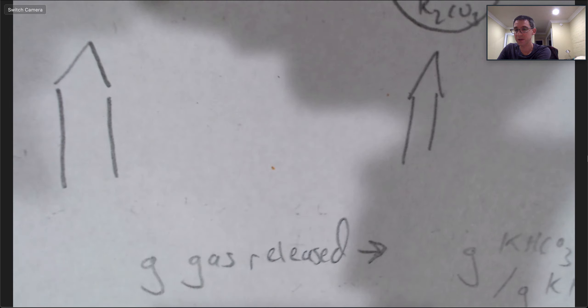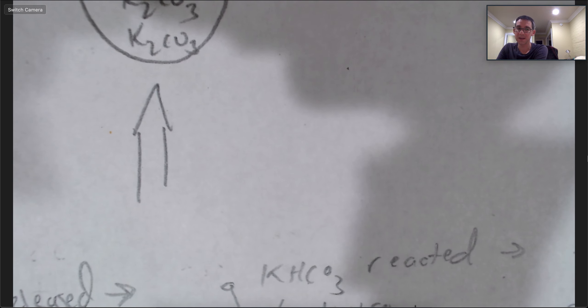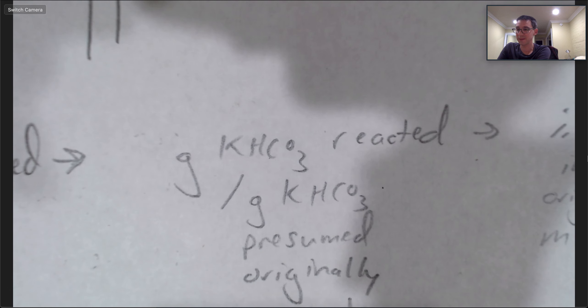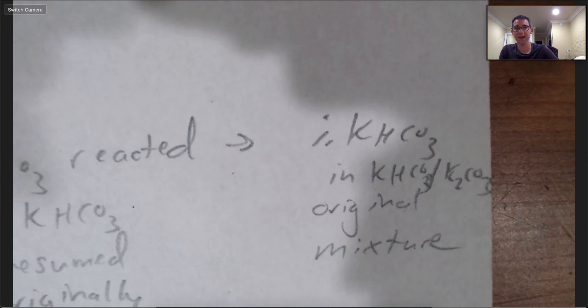And by knowing how much gas was released, you can know what number of grams of potassium hydrogen carbonate would have originally been present in that mixture, assuming that all of it had reacted, and hence what percentage of that original mixture was potassium hydrogen carbonate.